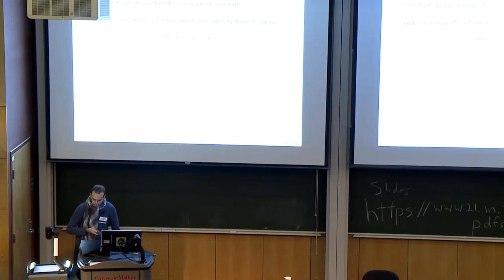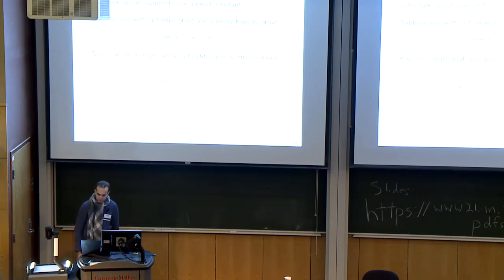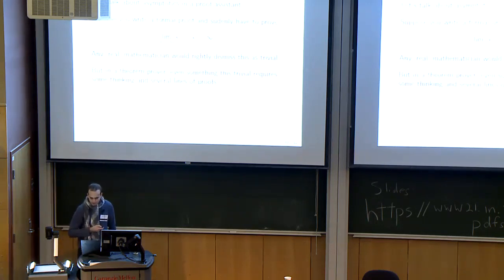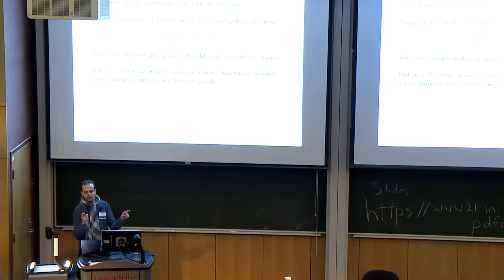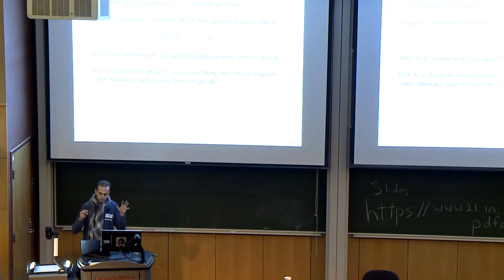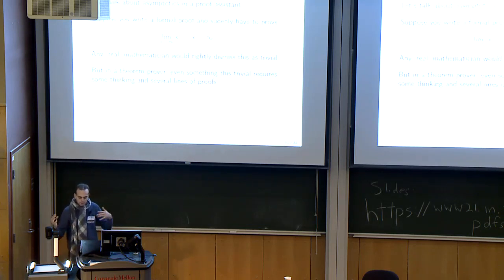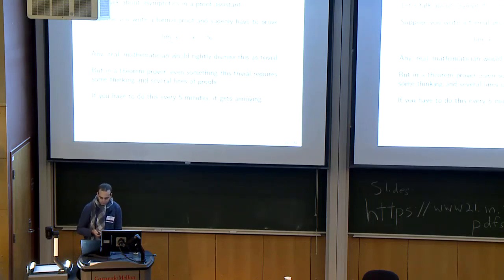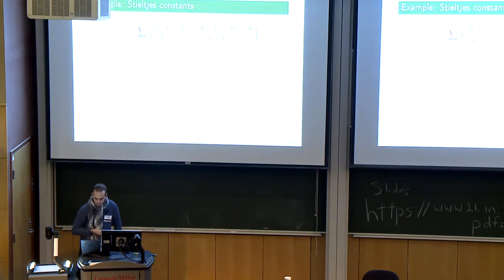Asymptotics in Isabelle — what is the problem? Imagine you have the limit: x squared minus x goes to infinity as x goes to infinity. It's probably obvious, and any real mathematician would say, why are you bothering me with this? But if you want to prove this in a proof system it's not quite as easy. You would factor this into x times (x minus 1), a product of two things that both go to infinity. But if you want to prove it by hand, you have to do the factorization, remember all the lemma names, and plug them together. If you're doing a large proof development and have to do this every five minutes, it gets really annoying.